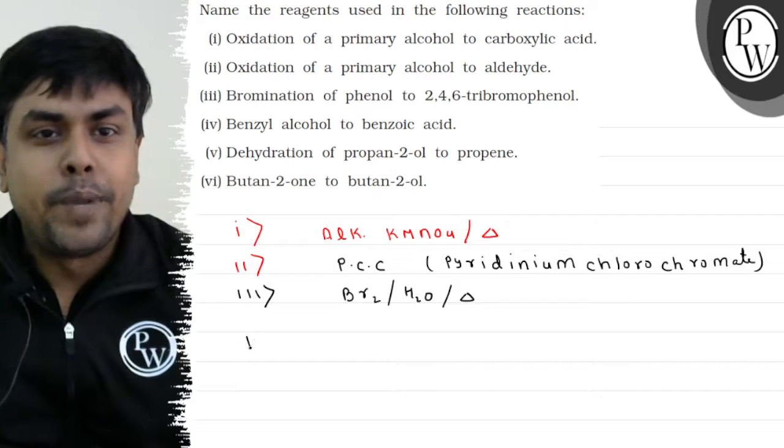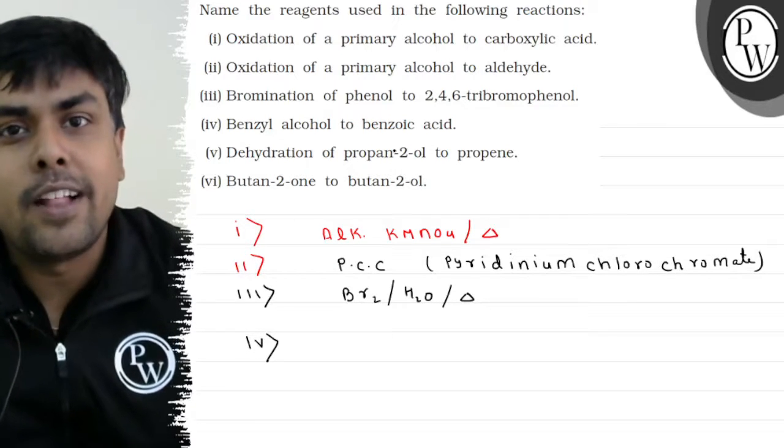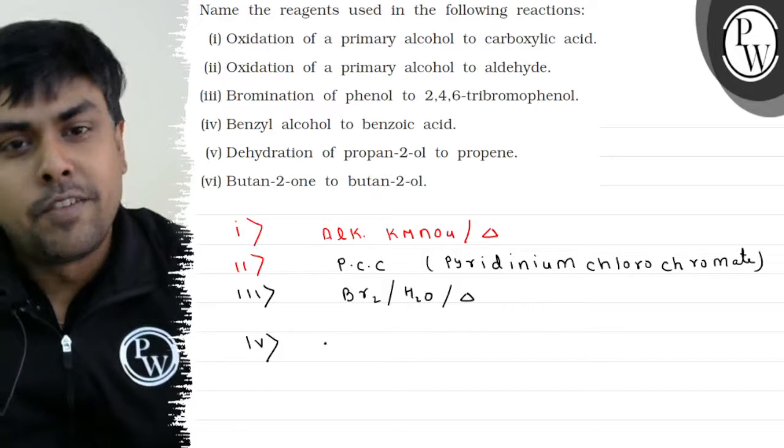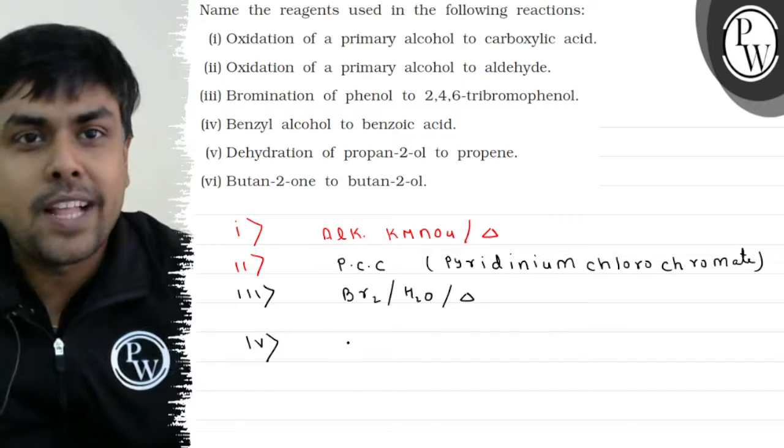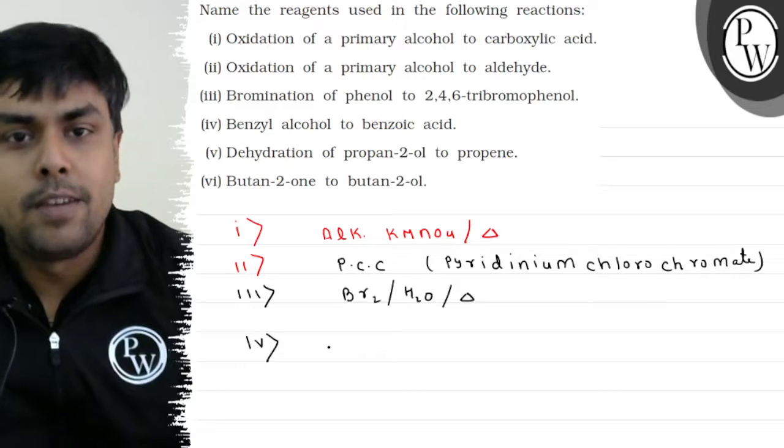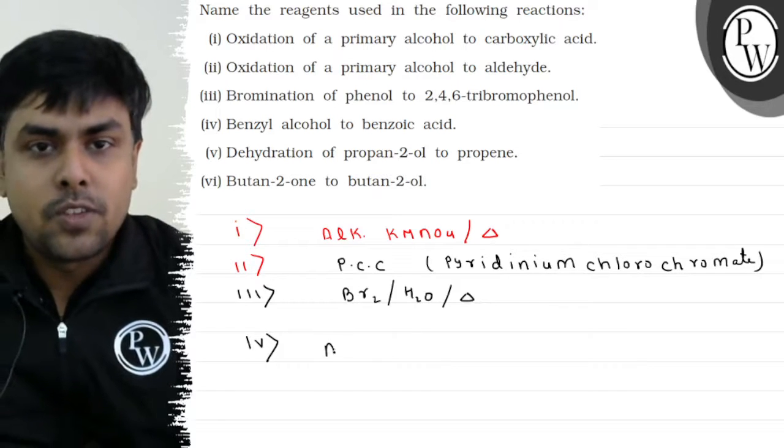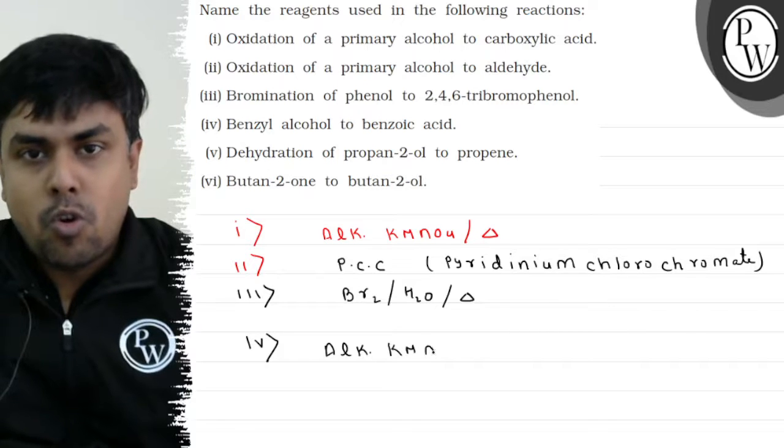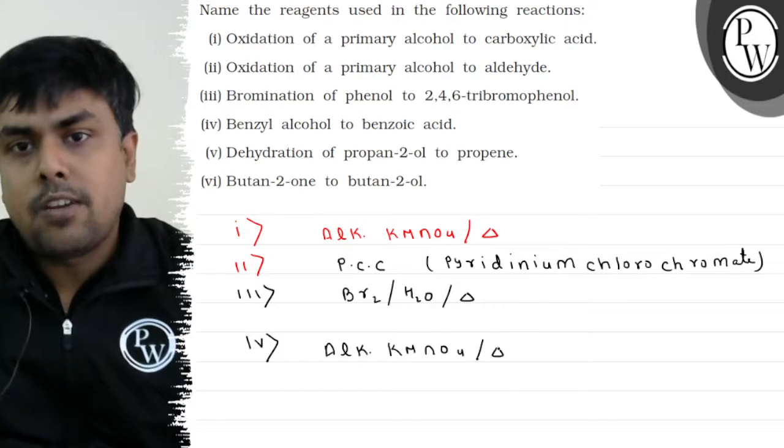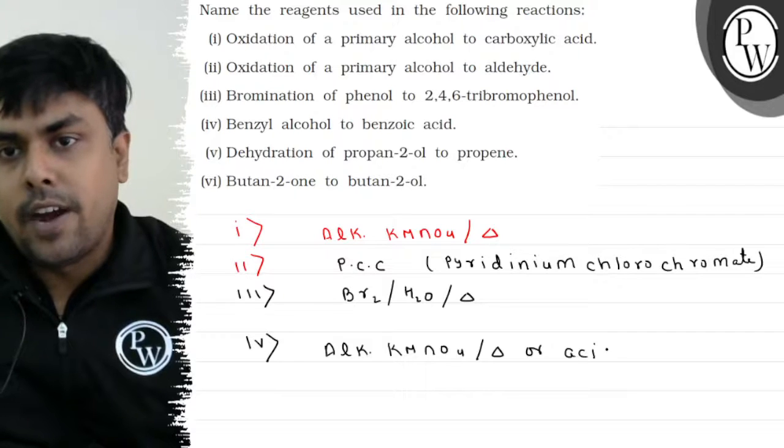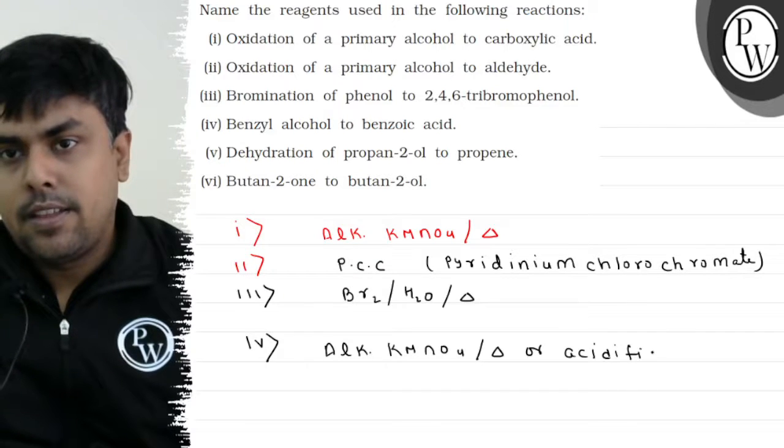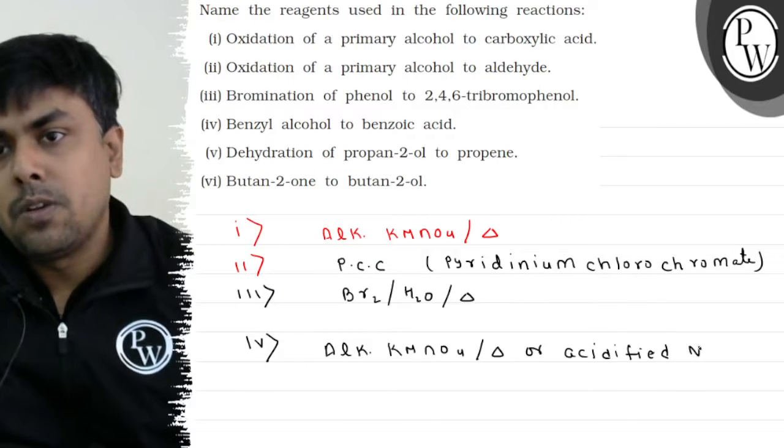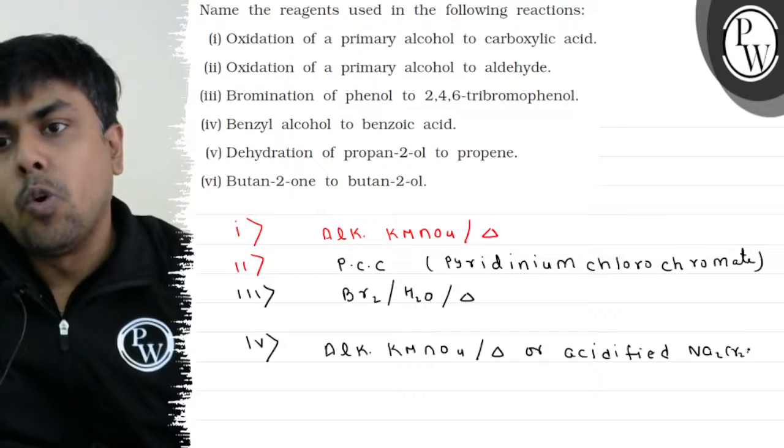Coming to part 4: Benzyl alcohol to benzoic acid. फिर से मेरे पास एक primary alcohol है, जिसको हमें acid में convert करना है. I can use alkaline KMnO4 with heat, or we can use acidified Na2Cr2O7.